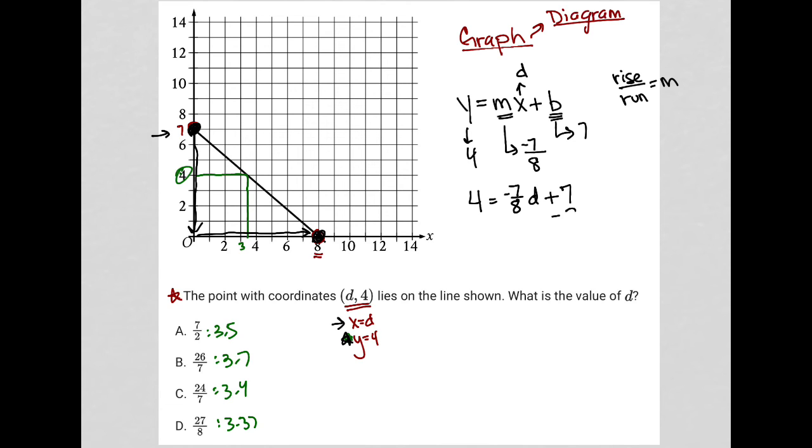So all I have left to do here is some algebra, getting ahead of myself a bit. So I subtract 7 from both sides here. So that's gone. 4 minus 7 is negative 3. It's equal to negative 7 eighths d.